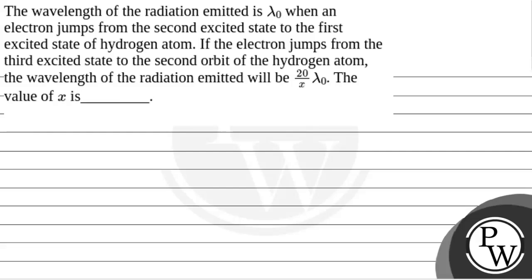Hello. Let's read the question. The question says that the wavelength of the radiation emitted is lambda naught when an electron jumps from the second excited state to the first excited state of a hydrogen atom. If the electron jumps from the third excited state to the second orbit of the hydrogen atom, the wavelength of the radiation emitted will be 220 lambda naught by x. The value of x is?